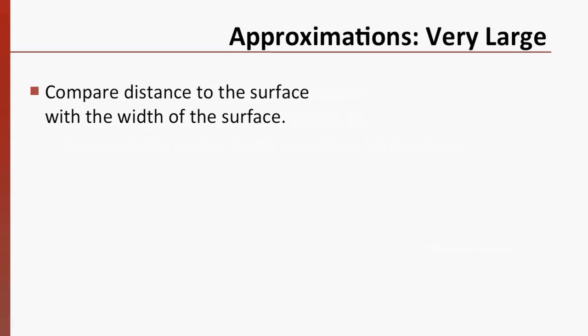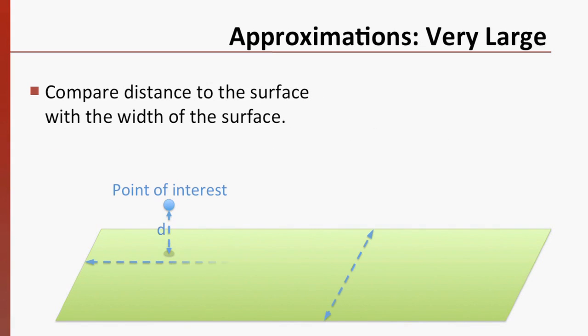Here's an example of the first approximation. Compare the distance from your point of interest to the object to the size of the object itself. If the smallest dimension of the object is ten times your distance from it, you can rely on a very good estimation from Gauss's law, even if your plane really isn't infinite.